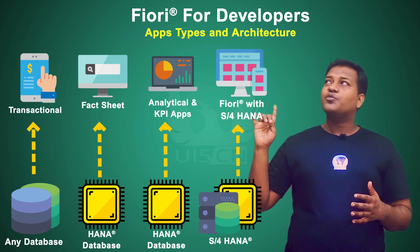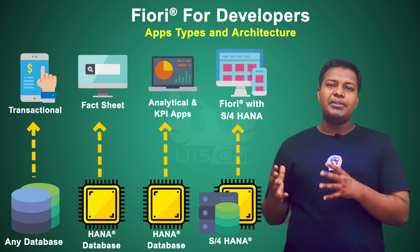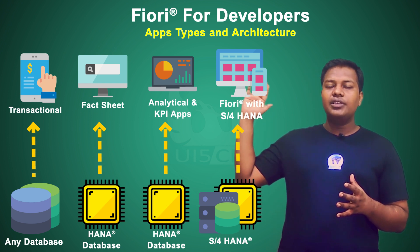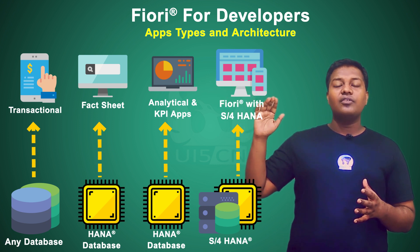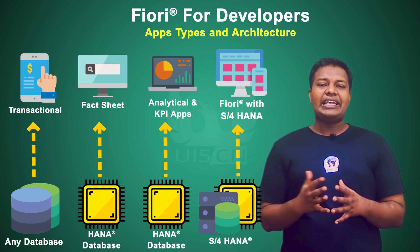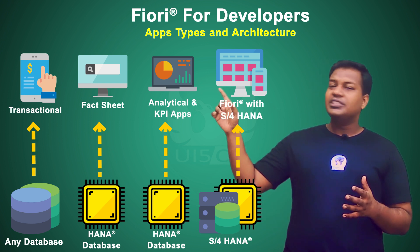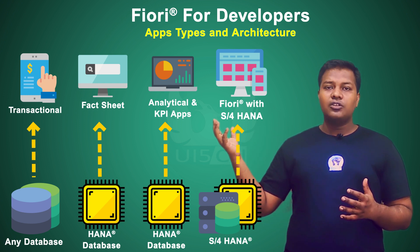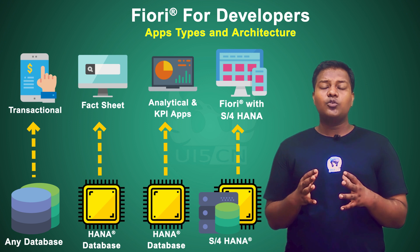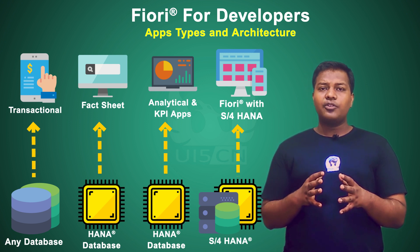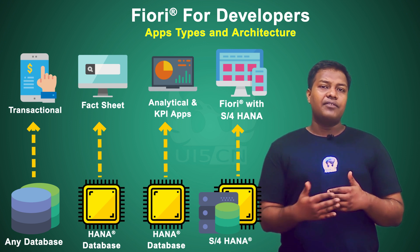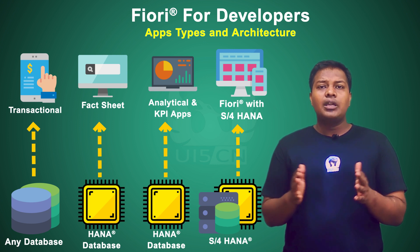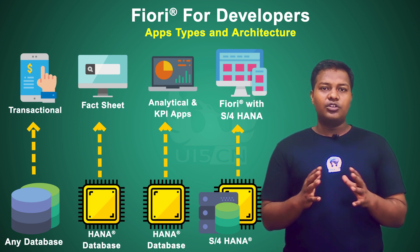So Fiori running on S/4 HANA as a business suite is an application type that is different in architecture — it can actually run all three different application types. You enter from your launchpad, and in your launchpad you will see these three types of applications. To summarize: the first is the transaction application, where you are trying to change some data and do read and write operations from the database. It has transactional properties and deals with business processes.